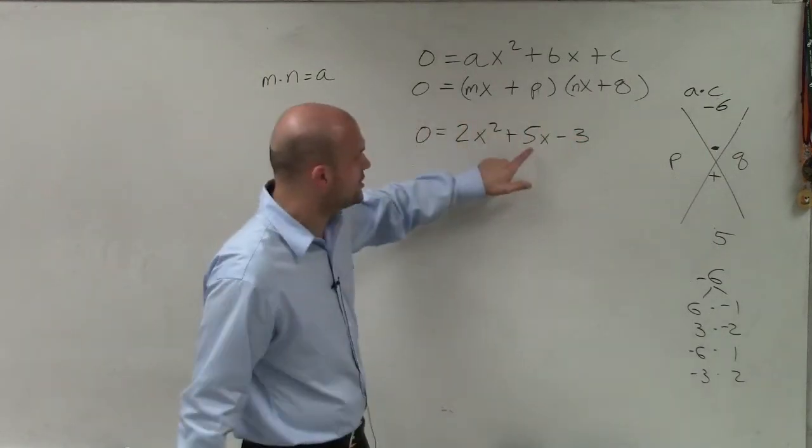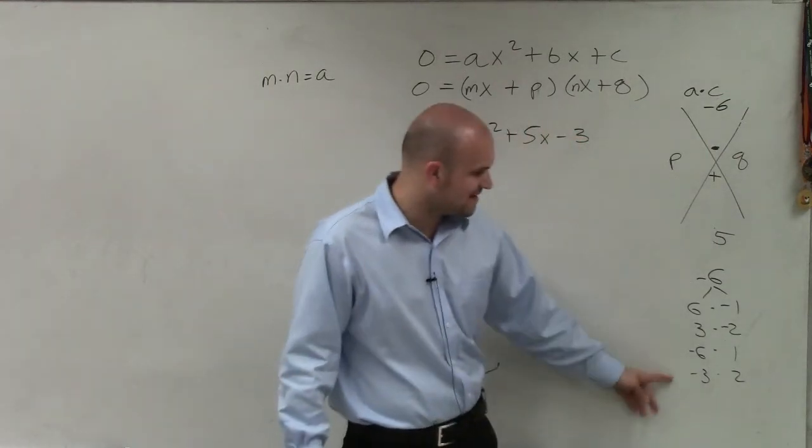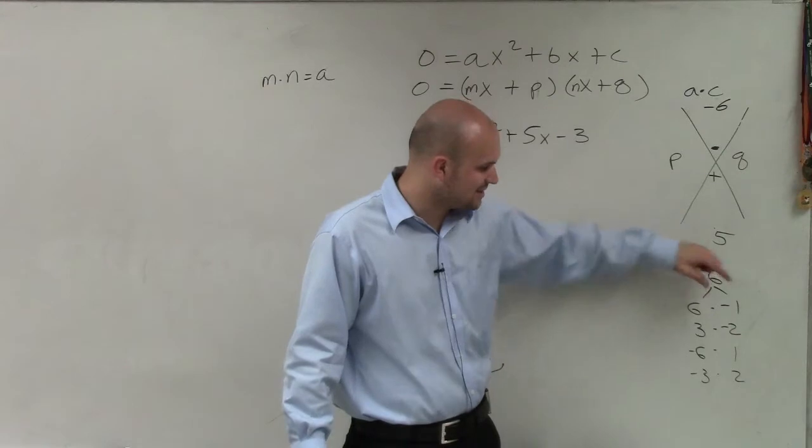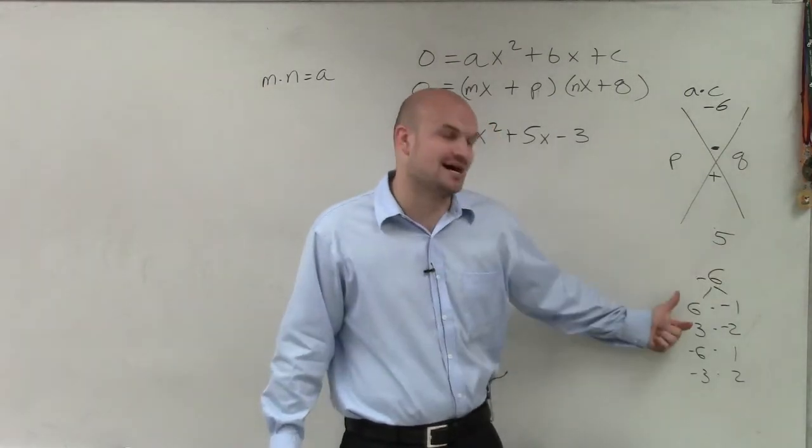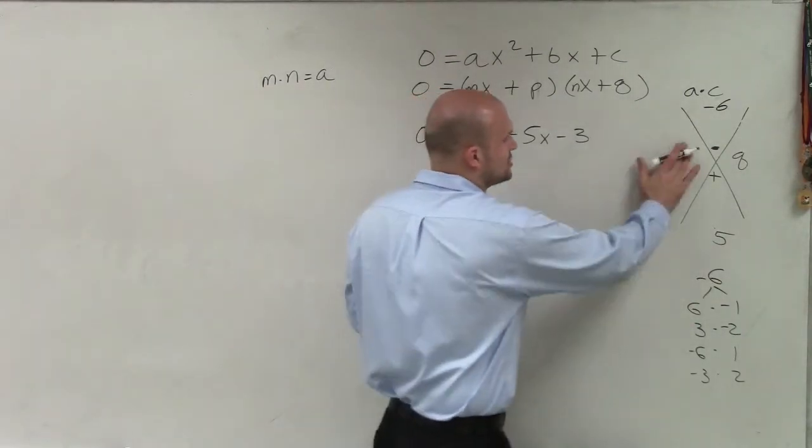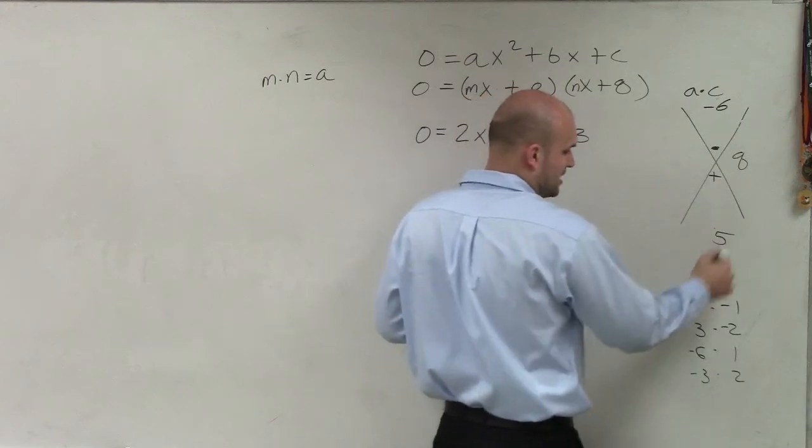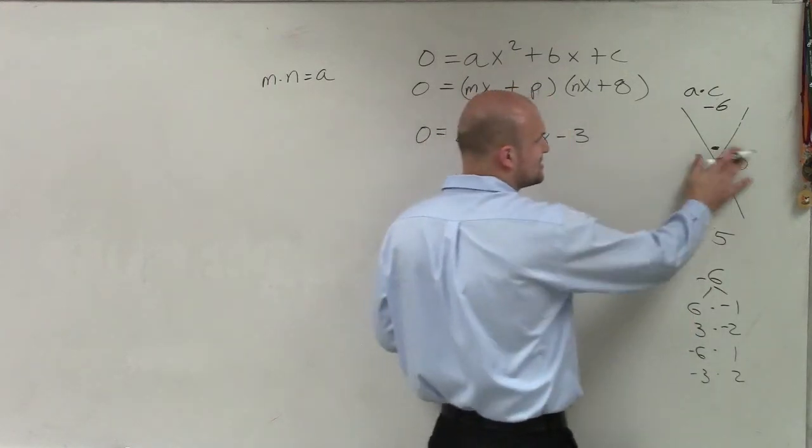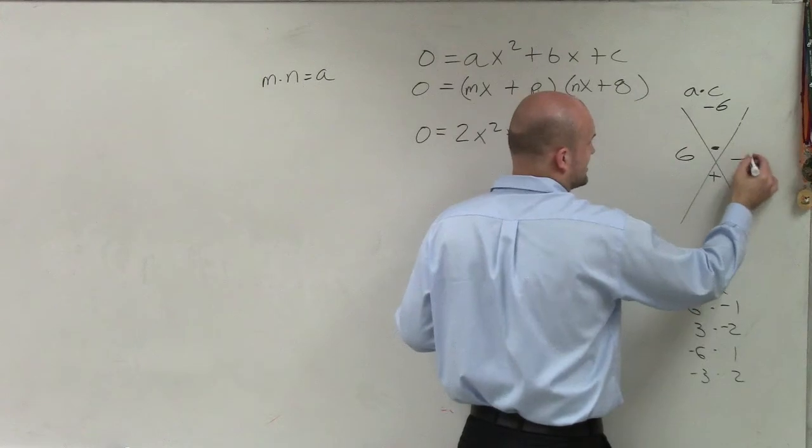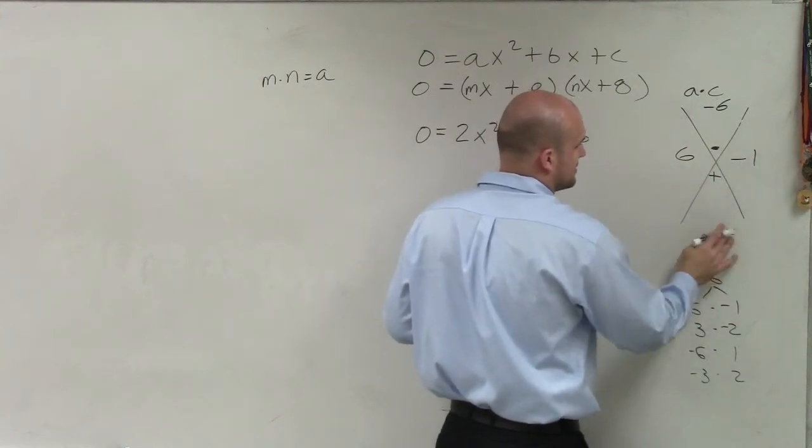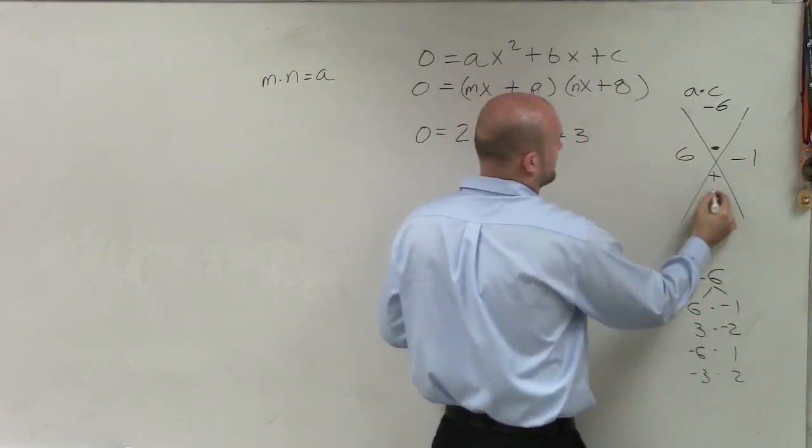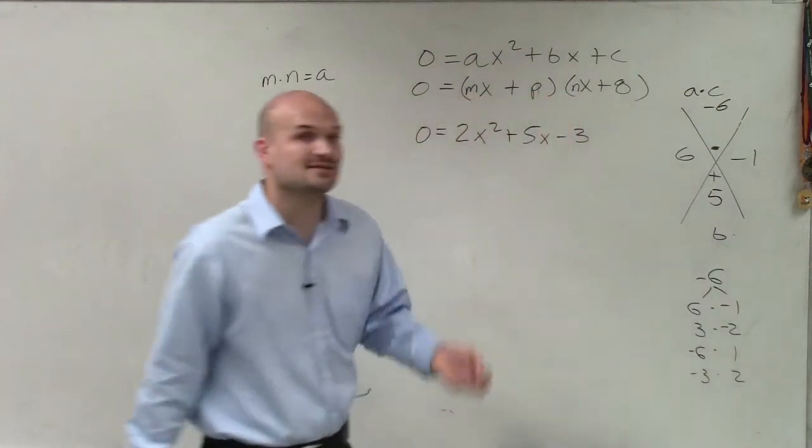I could also do negative 6 times 1 and negative 3 times 2. But what I told you before, since I know that 5 is positive, the larger of my factors has to be positive. Because as I add these, I want it to be a positive value. Well, you can see the two solutions are 5 and 6 and 1. 6 and negative 1, I'm sorry. So that's our b, which is 5, which we call b.